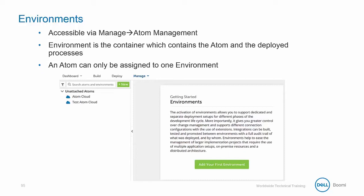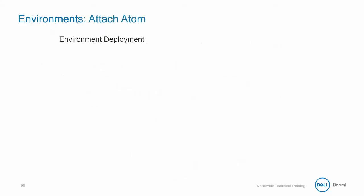Within environments, we'll attach a specific atom to control the process runtime. As we can see, the atom cloud and the test atom cloud that we created earlier are not yet attached to any environments, so they're listed in the unattached atoms list. Once you actually set up your environment, we need to attach that atom to the environment.